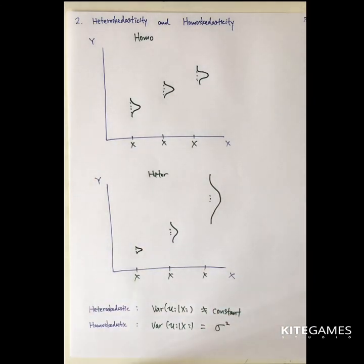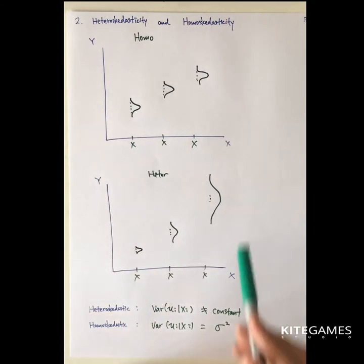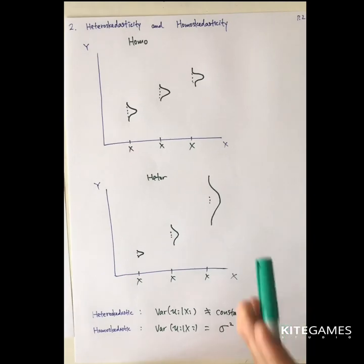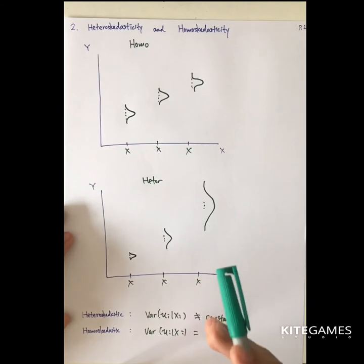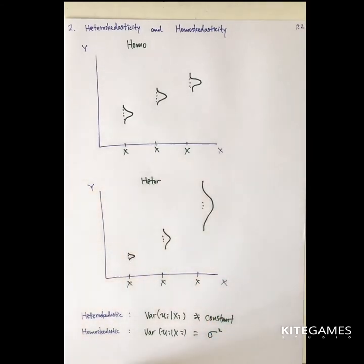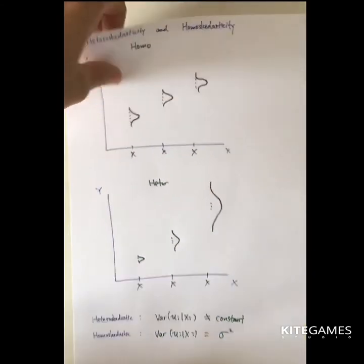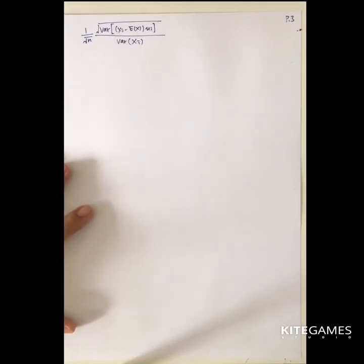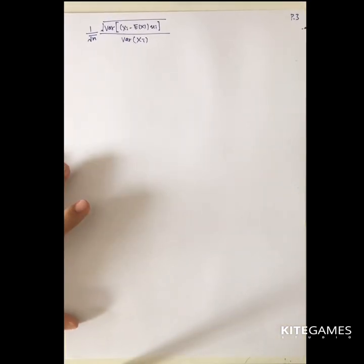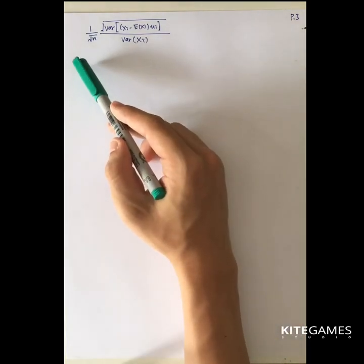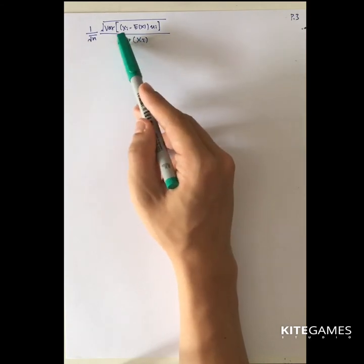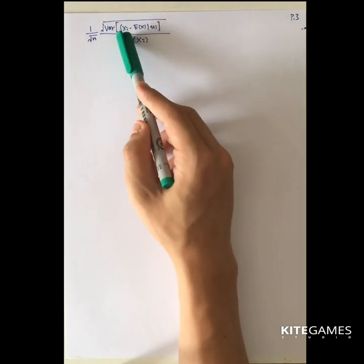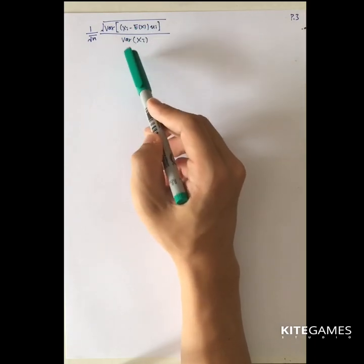So why do we care about homoscedasticity and heteroscedasticity? Because in different cases, we need to use different estimators to estimate beta 1 hat. We need to put different error terms into the estimation of beta 1. To be more specific, from the last video, we recall that the variance of beta 1 hat is in a specific form.